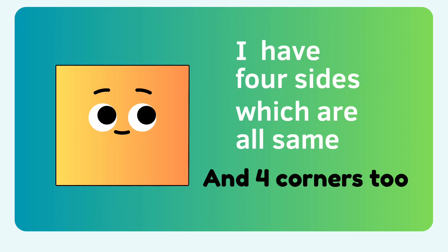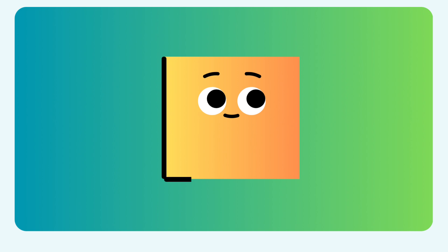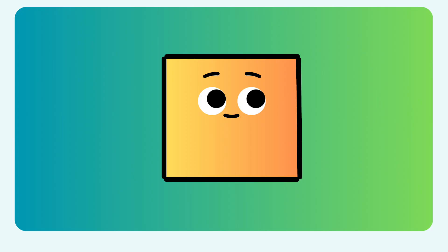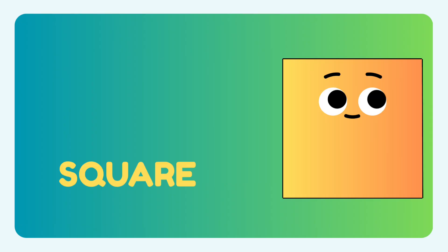I have four sides which are all the same, and four corners too. Let's see: one, two, three, and four. Now we see our four corners: one, two, three, and four. My four sides and four corners make me a square.